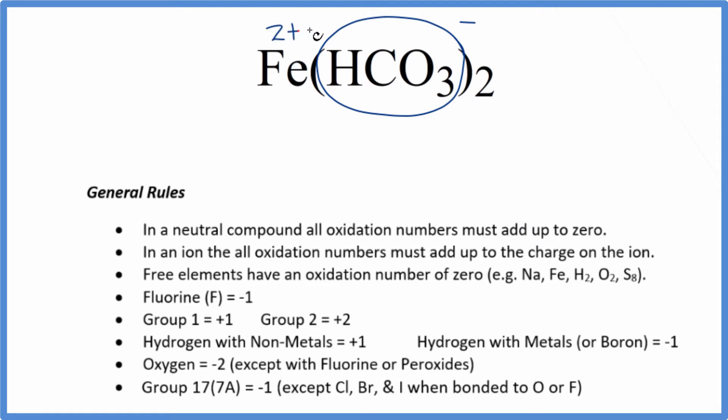To find the oxidation numbers for each element in the bicarbonate ion, we can look up hydrogen. Hydrogen is always plus one when it's with non-metals like carbon and oxygen. We don't know what carbon is; that's different depending on what it's bonded to, so we'll call that x. Oxygen is always minus two with just a few exceptions, and we have three of them.